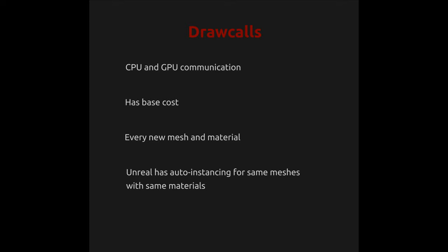Draw calls are the number of times the CPU and GPU have to communicate. Every draw call has a base cost independent from mesh or material complexity. Every new mesh and material adds a draw call. Unreal has auto-instancing for same meshes with same materials.